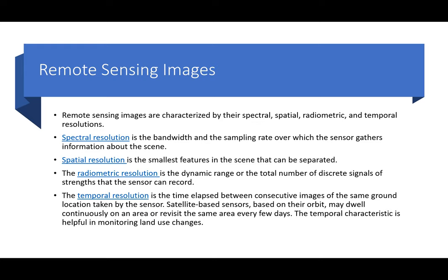Satellite-based sensors, based on their orbit, may dwell continuously on an area or revisit the same area every few days. The temporal characteristic is helpful in monitoring land use changes — what's happening in areas of vegetation, flood-prone areas, or development, where you get different resolution signatures for urbanized areas covered in asphalt versus natural pervious surfaces.